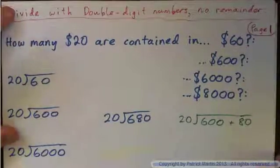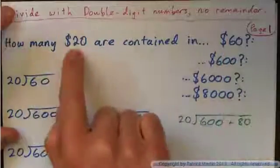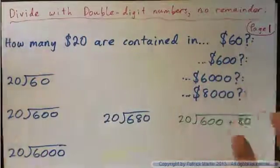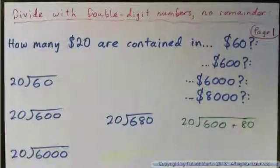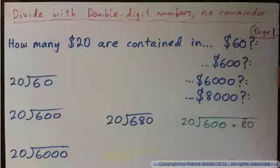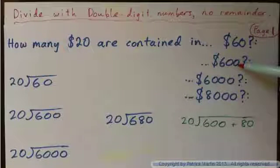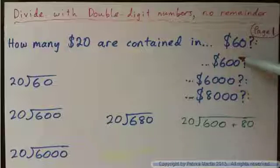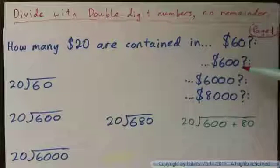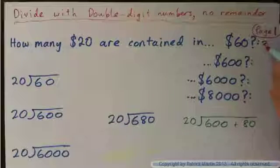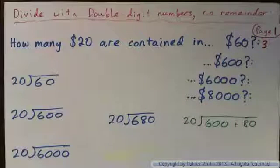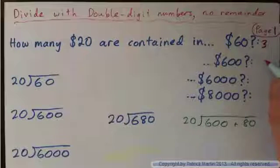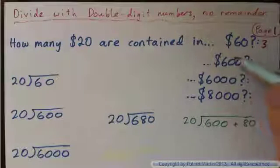Just think about what the answers to these things are. How many $20 bills are contained in $60? Don't write it out, just write down the answer. How many $20 bills are in $60? And $600? And $6,000? Can you write down the answers? Think about it in your head.